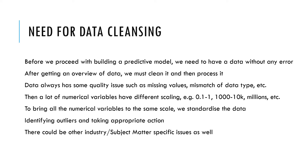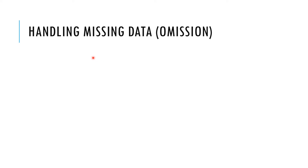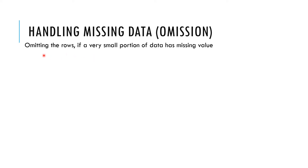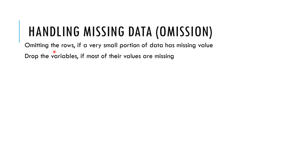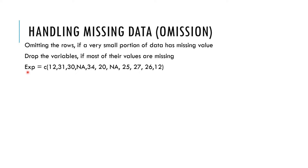One way to handle missing data is to omit the missing values. We omit rows if only a very small portion of the data has missing values — for example, if there are hundreds of rows but only two or three have missing values, we simply delete those rows. We can also drop entire variables if they have a lot of missing values and don't play an important role in building the model. We take these actions only after consulting the domain expert.